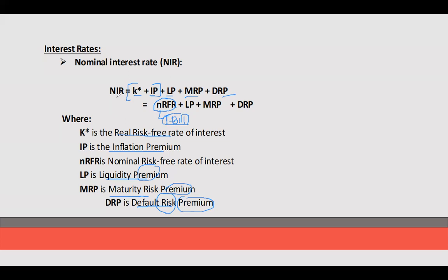Why do we still need to give interest even if it's risk-free? This is to entice, to encourage investors — instead of using and consuming their money by purchasing goods or services — to lend it by investing, whether to a bank, a corporation, or the government, because there is something in return. And that return is in the form of interest.